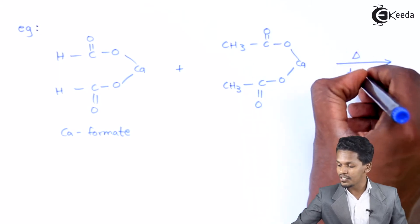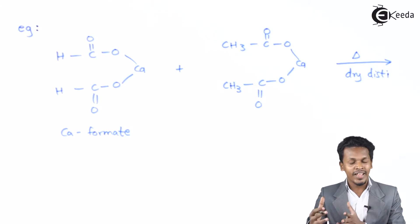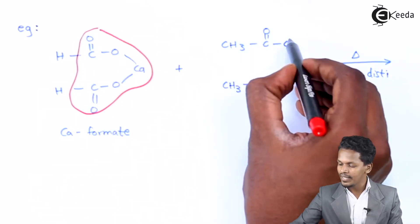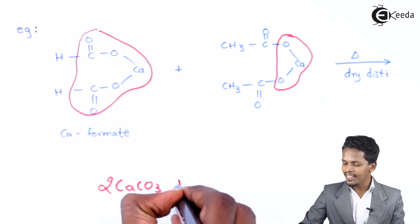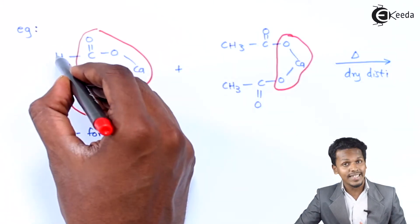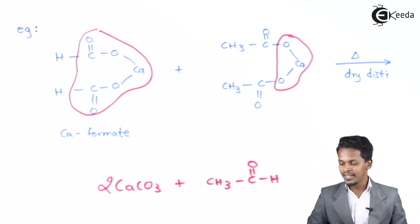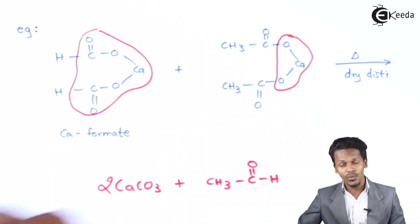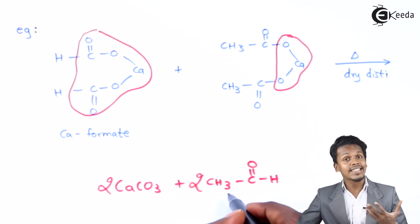Obviously, the calcium carbonate will be removed as a byproduct — this whole COO part from each molecule — giving two moles of CaCO₃. The product we form is CH₃–C(=O)–H, and we get another product that is the same: CH₃–C(=O)–H. So that is how we can form two moles of acetaldehyde, also called ethanal.